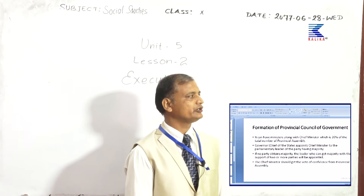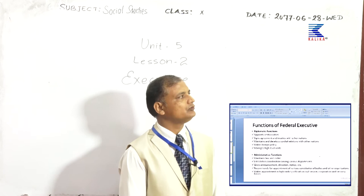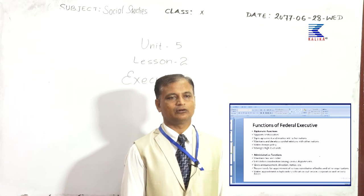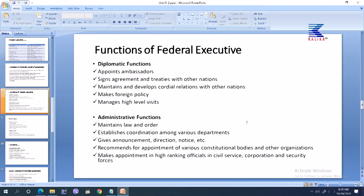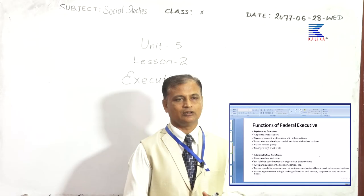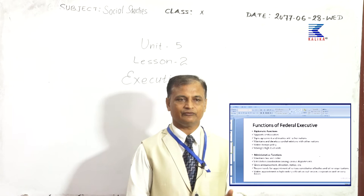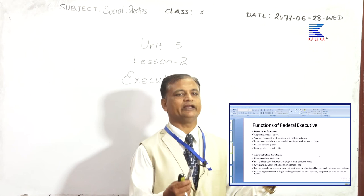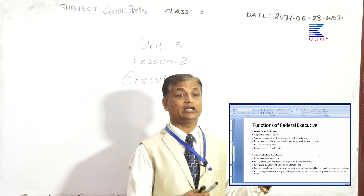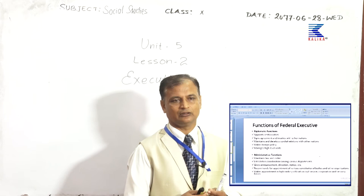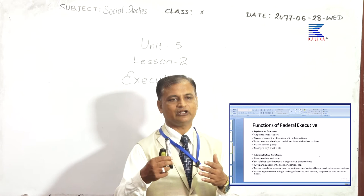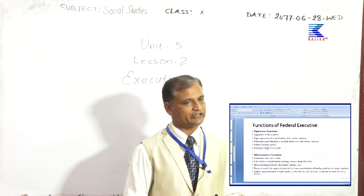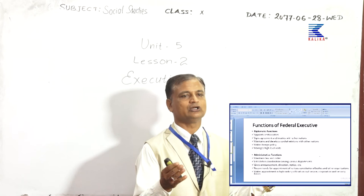Now we will look at the functions of the federal executive — what does the national government do? The first function is the diplomatic function. Diplomatic relates to foreign affairs — the different activities and relations to be carried out with other nations with which Nepal has a friendly relationship. We call it Dautya Sammanda or Kutnaytik Sammanda. With whatever nations Nepal has maintained relationships at the diplomatic level, the activities carried out with those nations constitute the diplomatic function.